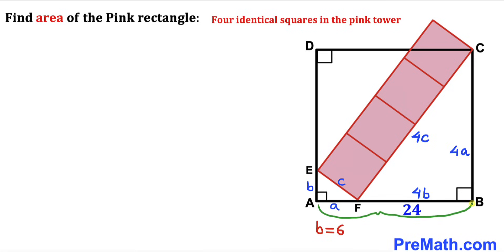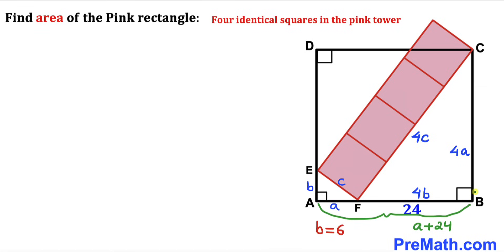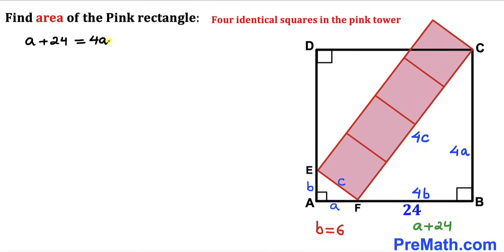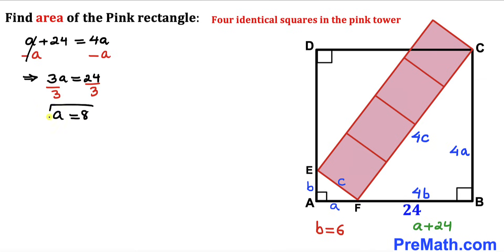The whole length AB equals a plus 24. Since we are dealing with square ABCD, side AB must equal side BC, and BC is 4a. So we equate: a + 24 = 4a. Subtracting a from both sides gives 3a = 24. Dividing both sides by 3, our a value turns out to be 8 units.